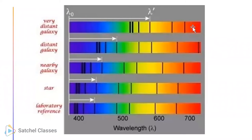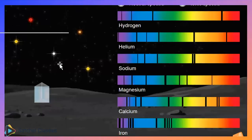Galaxies - all of them, apart from some very nearby ones like Andromeda, since we're in the Milky Way galaxy - they're all moving away from us and they're all moving away from each other. That's a very fundamental idea that was discovered. All the galaxies are moving away from us, and they're also moving away from each other.